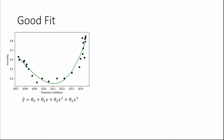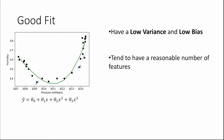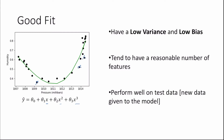We've looked at a model which underfits and a model which overfits our data — now we're going to look at a good fit. A good fit captures the underlying trend within the data without capturing much noise. Data points which aren't part of this bowl-shaped trend can be considered as noise. Models which fit our data well tend to have a low variance and a low bias, a reasonable number of features — here we have just three — and they perform well on test data.